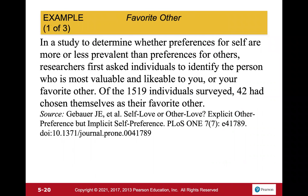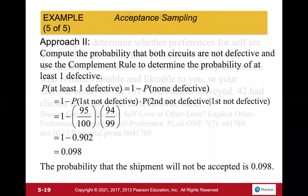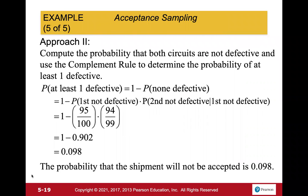Whenever we look at these probabilities, we have to remember: if the probability of one event affects the next, it's a dependent event and we can't simply raise to a power. The denominators must be adjusted.